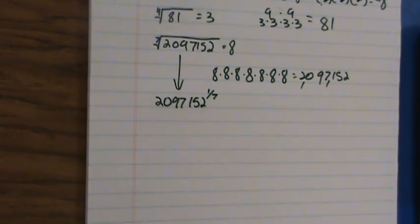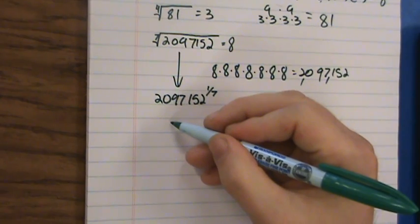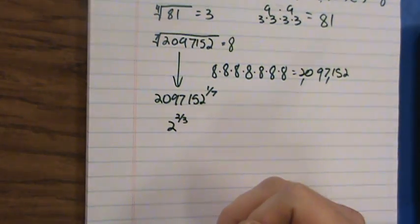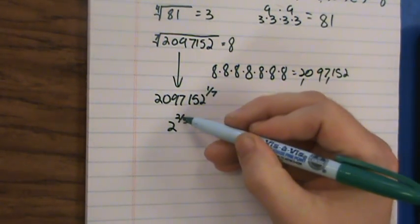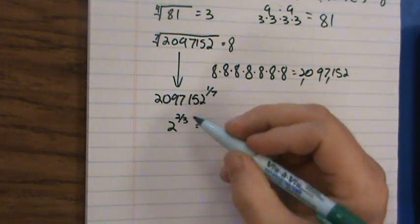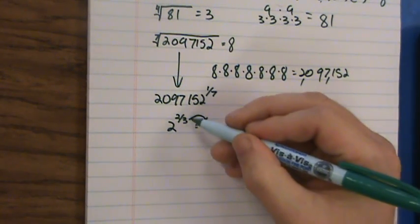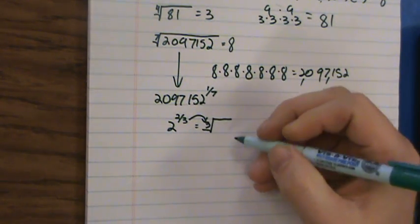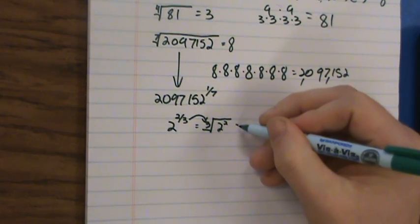Let's continue with rational exponents and introduce a couple of properties. Say you want to do two to the two-thirds power. The very basic thing to remember is that the number in the denominator is the root, and the number in the numerator is the power — the power you're raising it to, like two squared. So I take this three, and since it's in the denominator of the rational exponent, it becomes the root — the third root — of two squared. The two became the power.